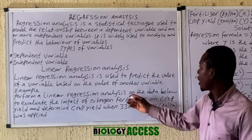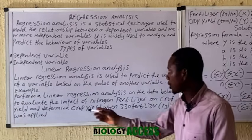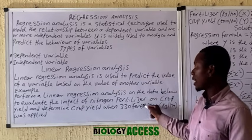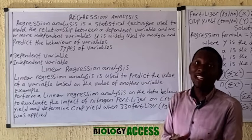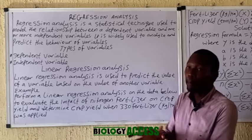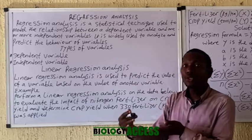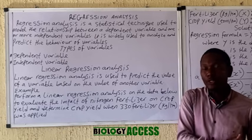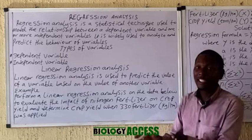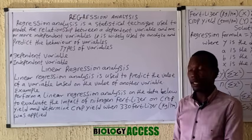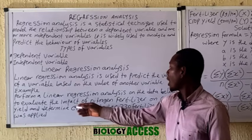Let's take a look at this example: prepare a linear regression analysis on the data below to evaluate the impact of nitrogen fertilizer on crop yield. Nitrogen fertilizer is the independent variable because you apply it — you use it to predict the outcome. The crop yield is the dependent variable, while the fertilizer you apply is the independent variable.